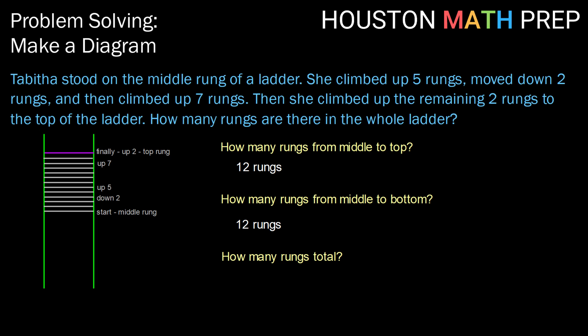So how many rungs would that make in total? Well, there would be 12 on top plus the middle rung itself plus 12 on bottom to give us a total of 25 rungs. So there we have our final answer. Given this information and the diagram we created, there are 25 rungs on the ladder.